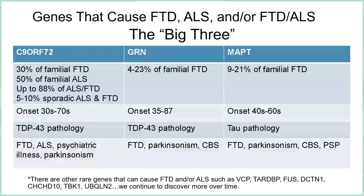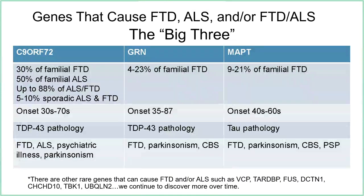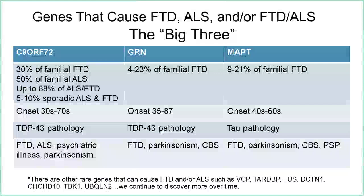While these are the big three, they're not the only three. There are lots of other genes that are a little bit more rare that can cause FTD, ALS, or both, some of which are listed on the screen. More are being discovered as we continue to do research, and a lot of this research is fueled by participation by people like you — so thank you for allowing us to continue to understand this disease better.